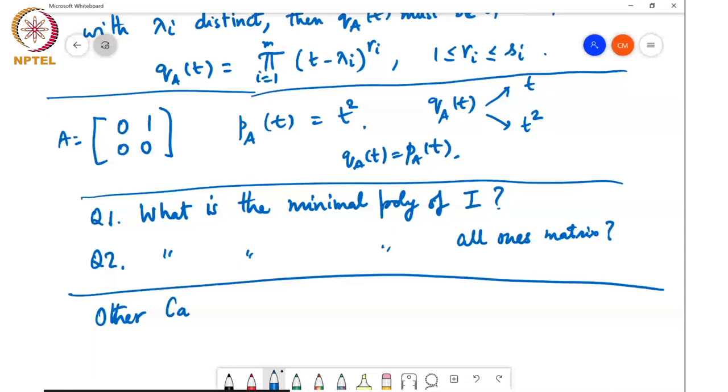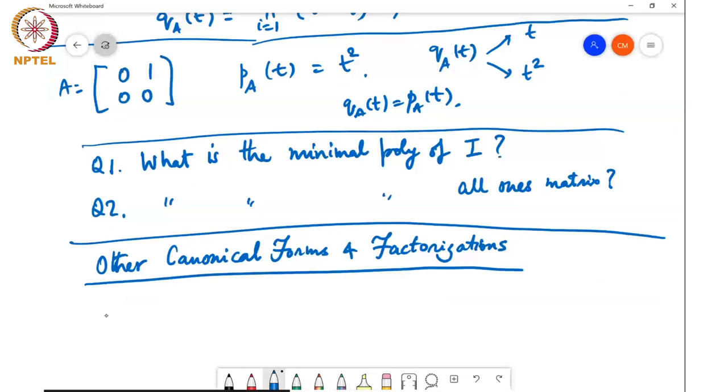So specifically we will look at triangular factorizations where you will reduce a matrix to a triangular form. And this is useful because if you are trying to solve a system of linear equations, then if A is... suppose we have...